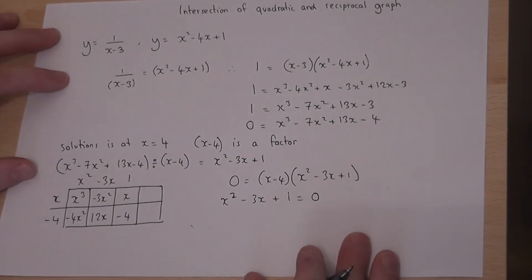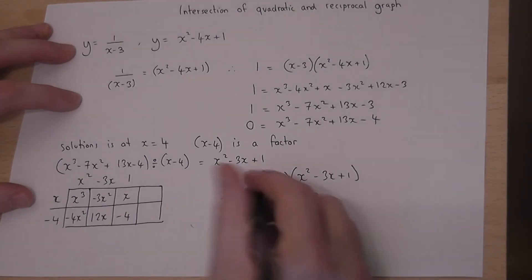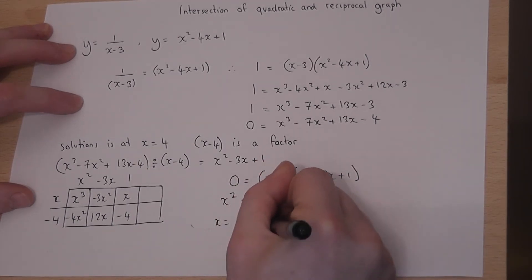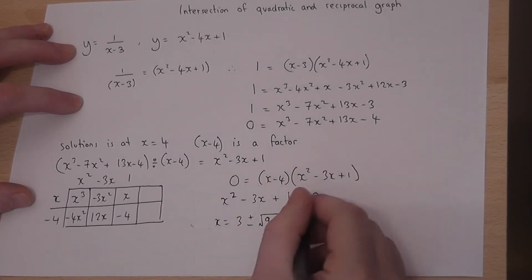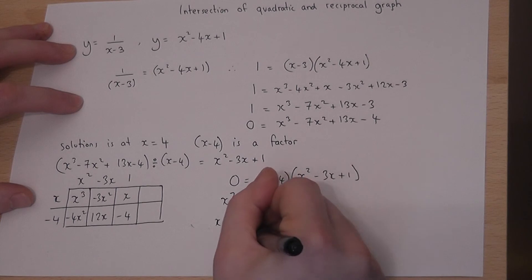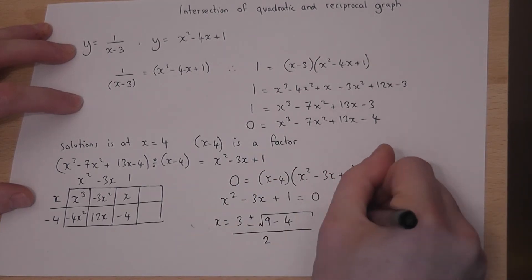I would probably use the quadratic equation. So x is equal to minus b, which becomes plus 3, plus or minus the square root of b², which is 9, minus 4 times a times c, which is 4, all over 2 times a. So x equals 3 plus or minus the root of 5 all over 2.